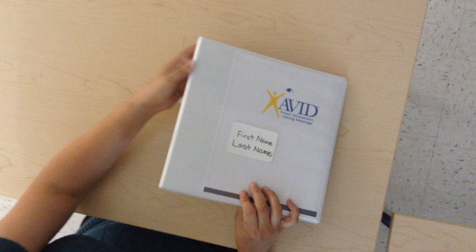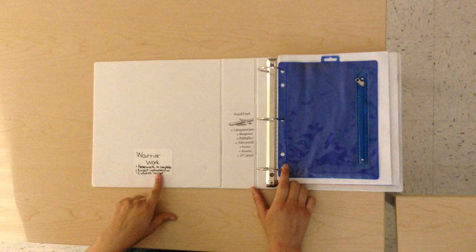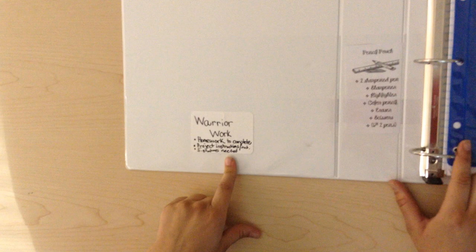As we open our AVID binder, we will place the label for warrior work on your left-hand side. Warrior work includes homework to be completed at home, project instructions and materials, and papers where signatures from an adult are needed.